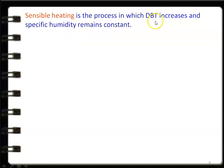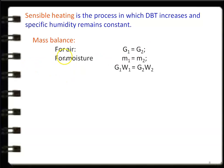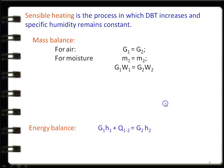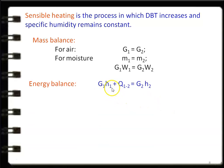Sensible heating is the process in which dry bulb temperature increases and specific humidity remains constant. For the energy balance: G1 = G2 (no change in air quantity) and M1 = M2 (no change in moisture quantity). From the definition of specific humidity: W1 = M1/G1 and W2 = M2/G2, so W1 = W2. Writing the energy balance: G1·H1 + Q12 = G2·H2, so dividing by G, the heat added Q12 = G·(H2 − H1).